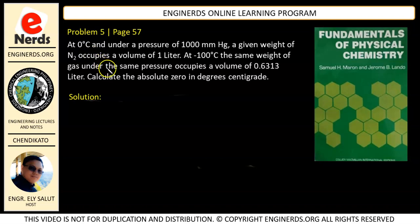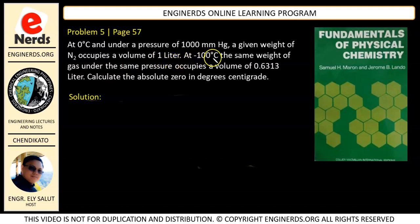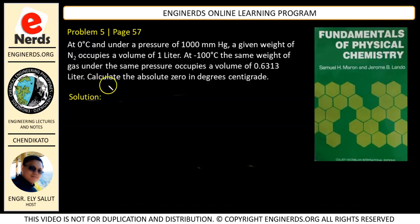Let me read the problem first. At 0 degrees Celsius and under a pressure of 1000 mmHg, a given weight of N2 occupies a volume of 1 liter. At negative 100 degrees Celsius, the same weight of gas under the same pressure occupies a volume of 0.6313 liter. Calculate the absolute zero in degrees centigrade.